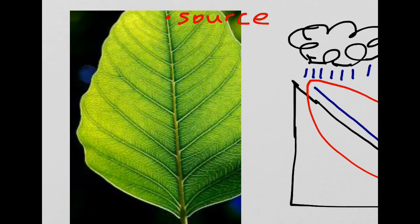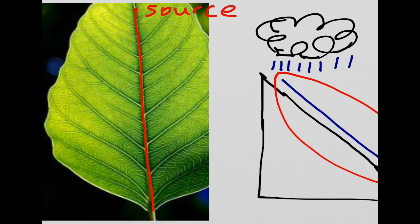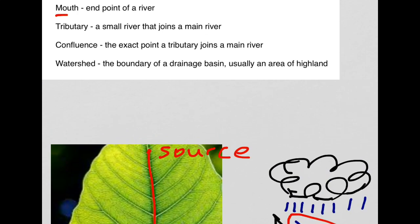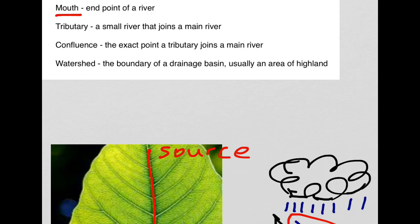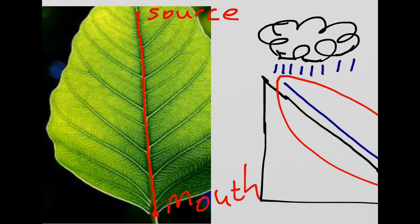The main stem represents the main river channel that I have just highlighted. At the bottom of the diagram, this point represents the mouth of the river. The mouth of the river is the end point of a river, normally where the river enters a sea.